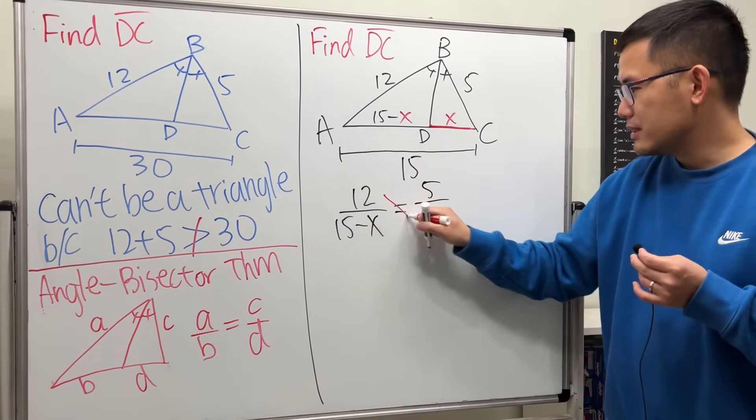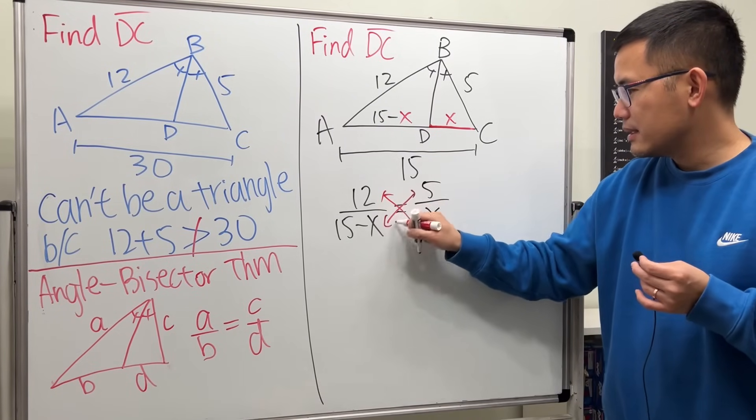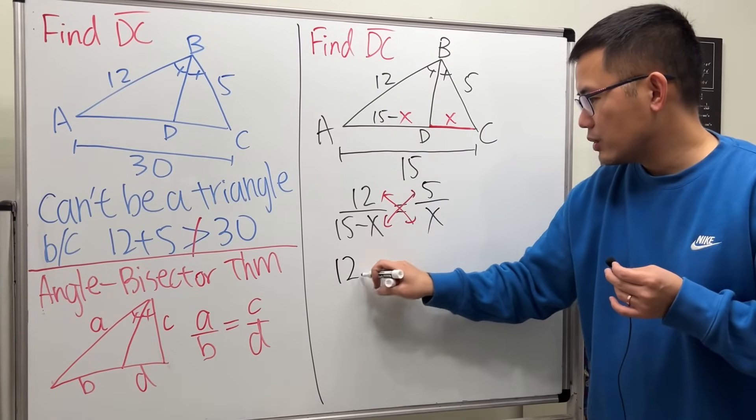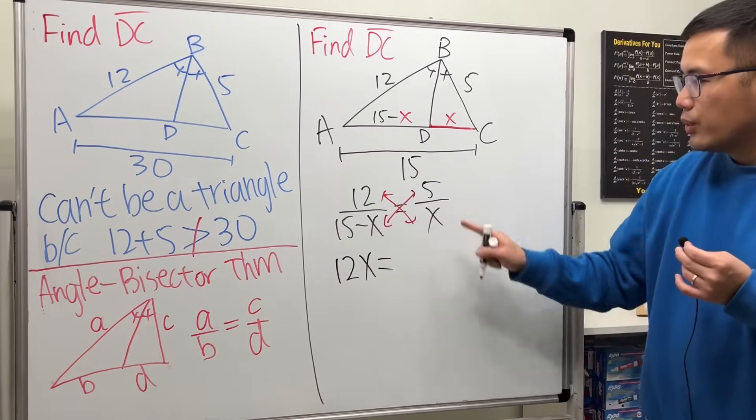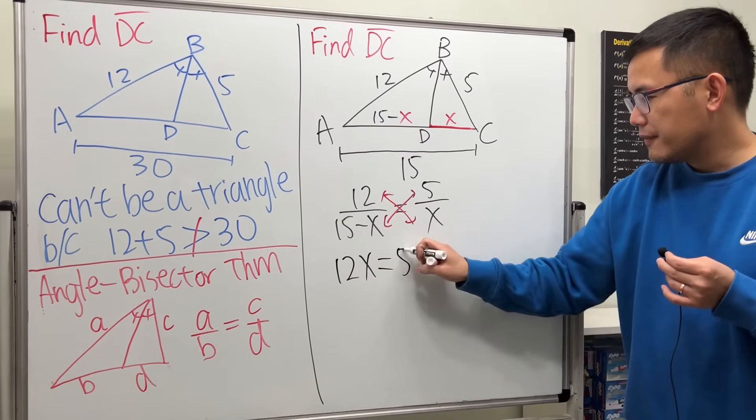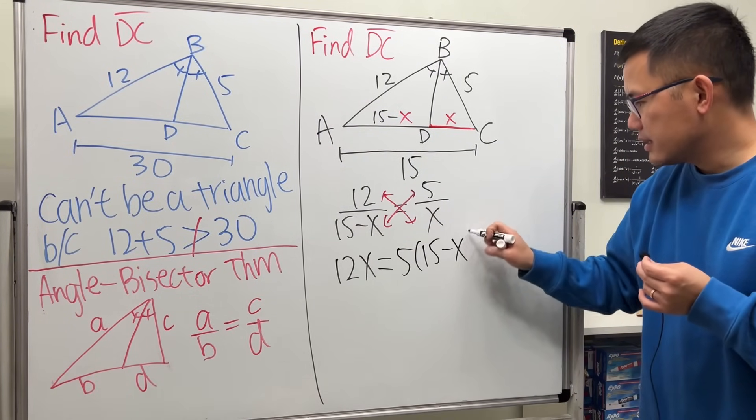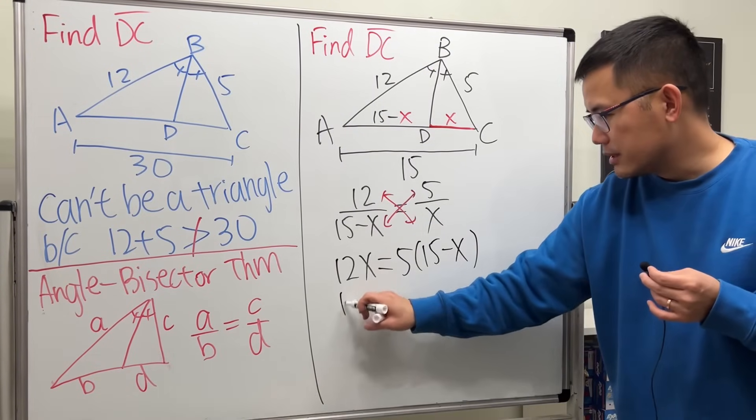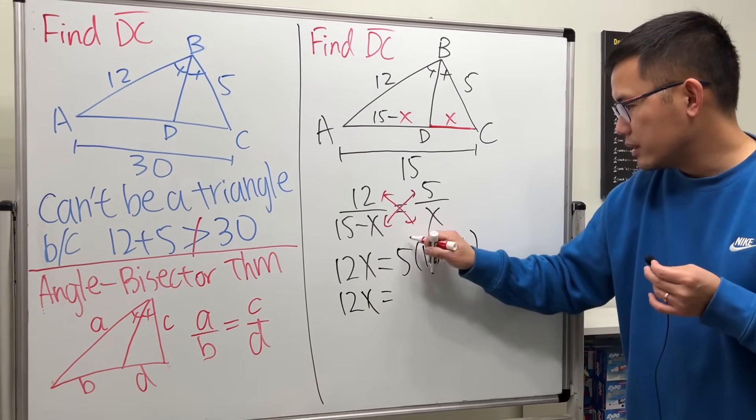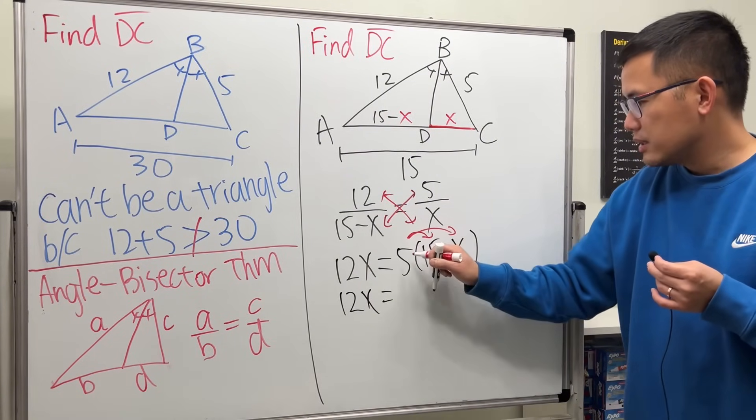And then just solve it. So this times this, this times that: 12 times x, that's 12x, that's equal to 5 times that - 5. Let me put down parentheses for the 15 minus x. So this is 12x. We will distribute first, so 5 times 15 is 75, 5 times that is negative 5x.